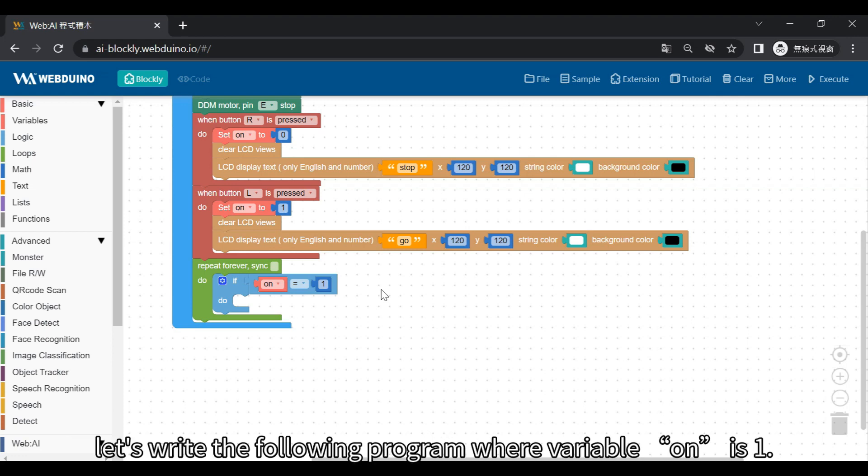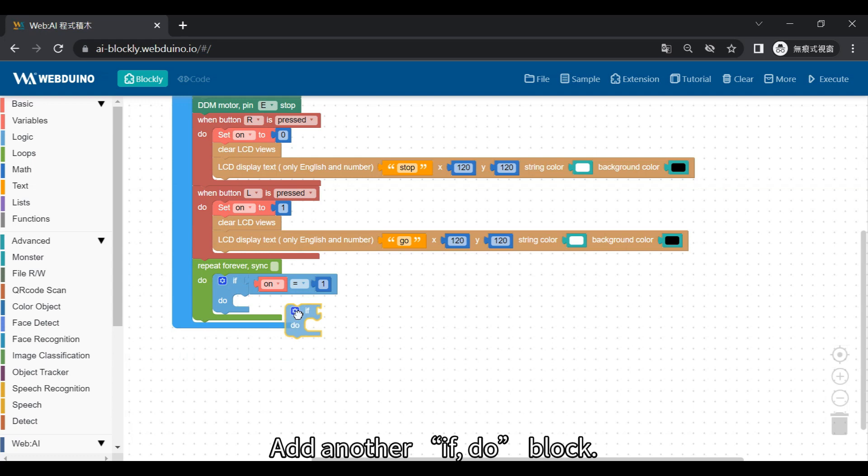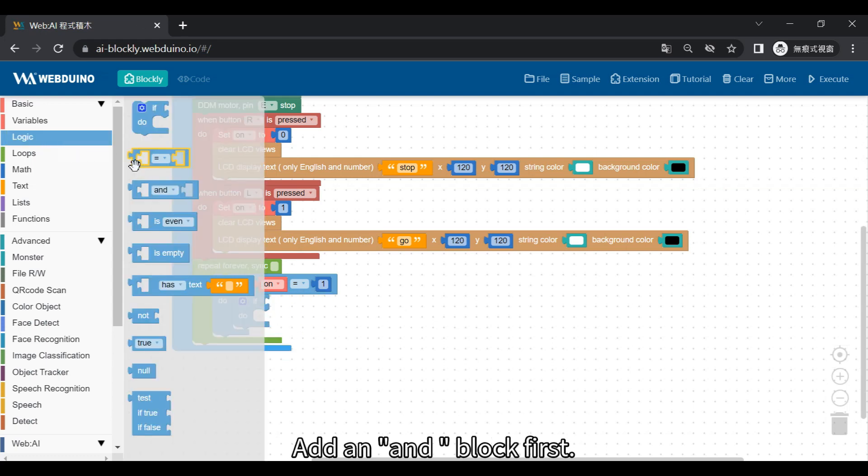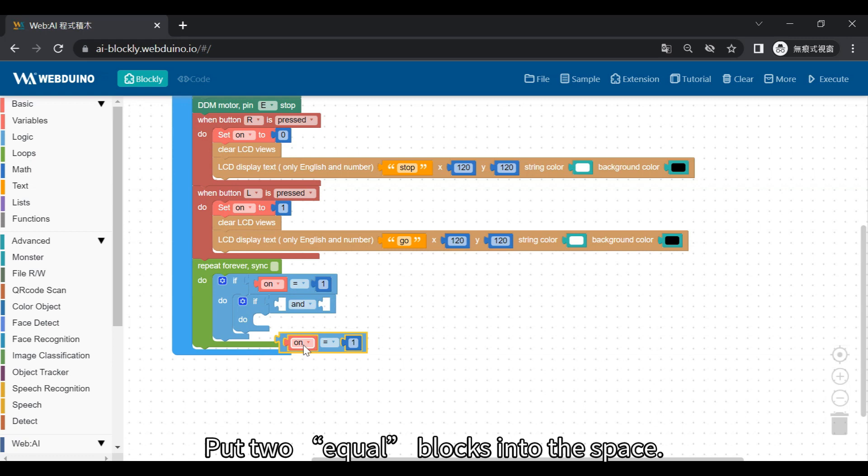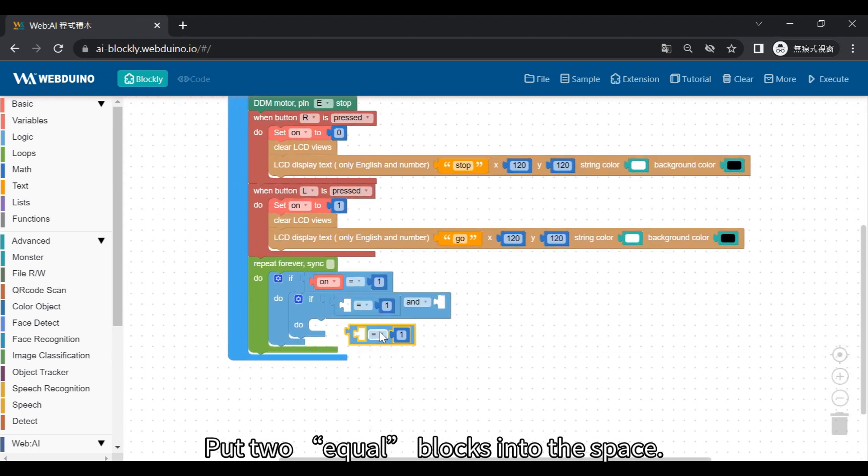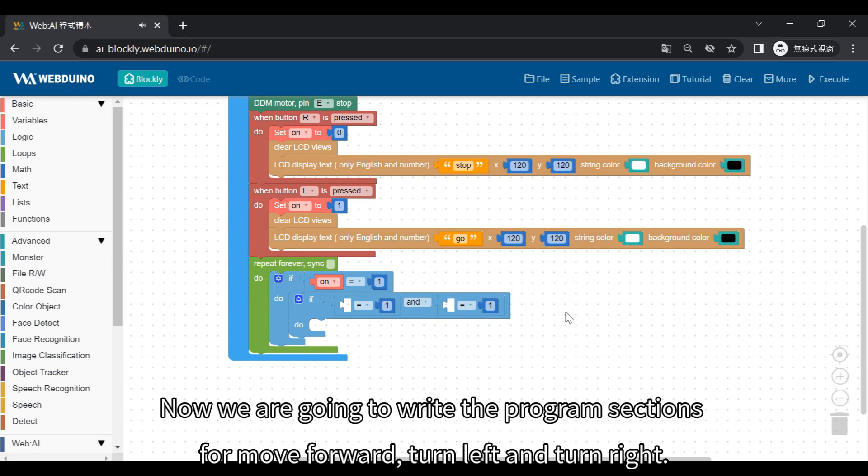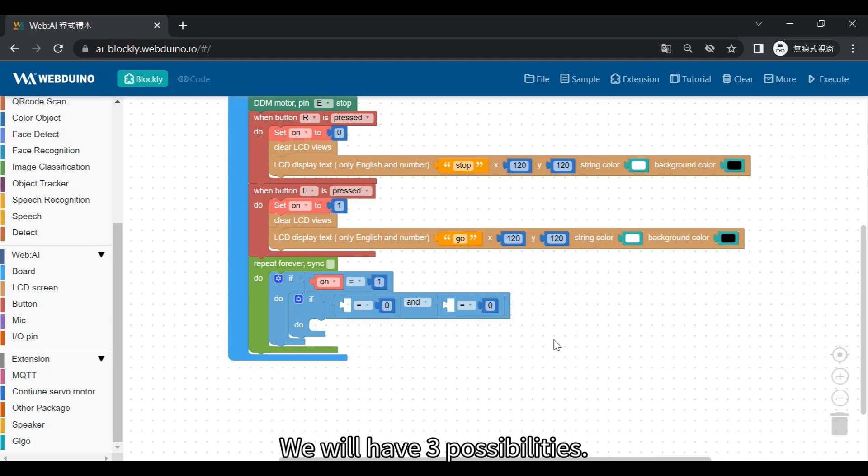Okay, let's write the following program where variable on is 1. Add another if do block. Add an end block first. Then copy this block. Put two equal blocks into the space. Now we are going to write the program sections for move forward, turn left, and turn right. We will have three possibilities.